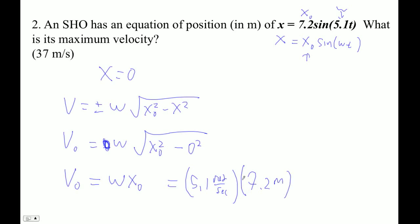And radians aren't really any units, so we're going to end up with meters per second. So 5.1 times 7.2 is 36.72 meters per second. Which with two sig figs, we'd have to say 37.